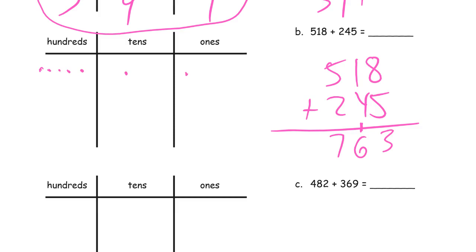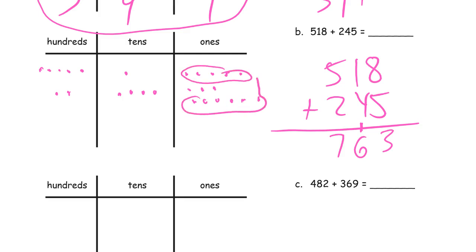And 245. Now you might see that those two fives together are going to make 10. And I'm going to have three ones left behind. We count our tens — we've got four here, one more there, that's five, six. And we count our hundreds: five, six, seven. Seven hundred sixty-three.